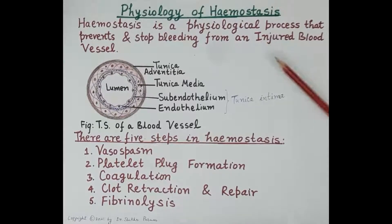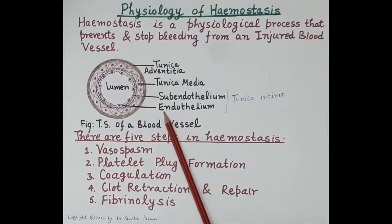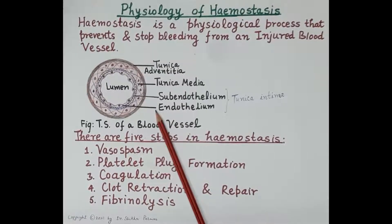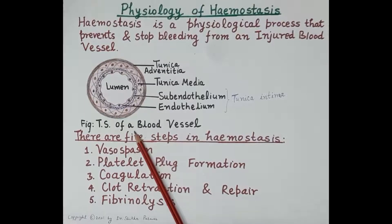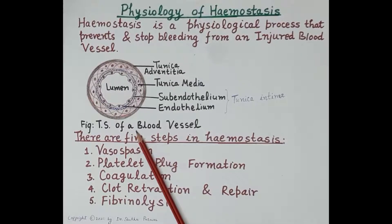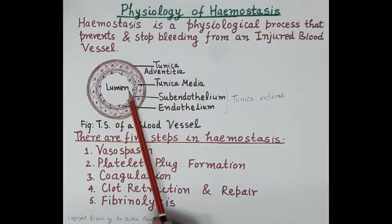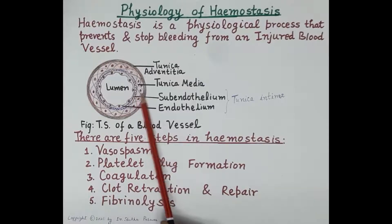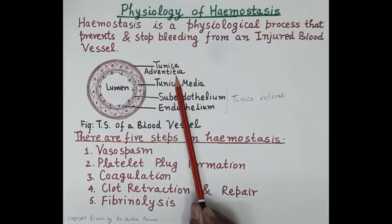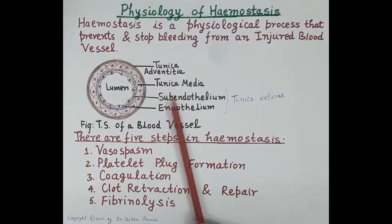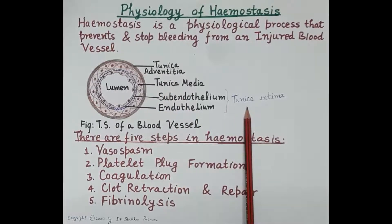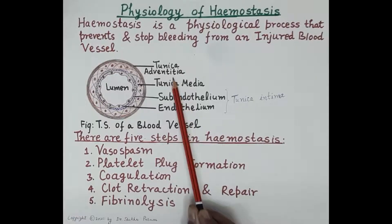Let's first review the structure of the wall of a blood vessel in order to understand the process of hemostasis. This is a transverse section of a blood vessel. Blood vessels are the elastic tubes through which blood circulates in the body. In the center is the lumen, the space in which blood flows. The wall of the blood vessel is made up of three layers: the outermost is the tunica adventitia, the middle is the tunica media, and the innermost is the tunica intima.